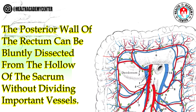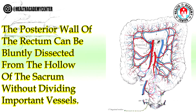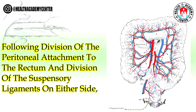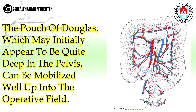The posterior wall of the rectum can be bluntly dissected from the hollow of the sacrum without dividing important vessels. The blood supply of the rectum is in the mesentery adjacent to the posterior rectal wall. Following division of the peritoneal attachment to the rectum and division of the suspensory ligaments on either side, the rectum can be straightened with a resultant gain of considerable distance. The pouch of Douglas, which may initially appear quite deep in the pelvis, can be mobilized well up into the operative field.